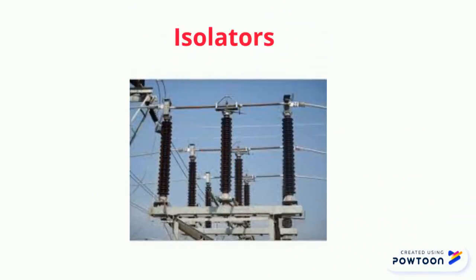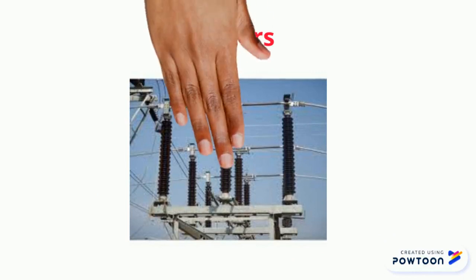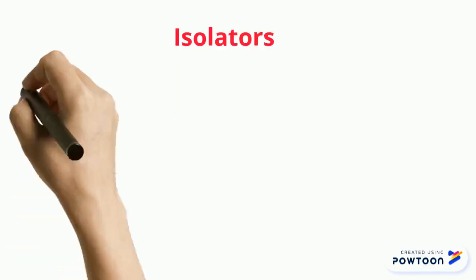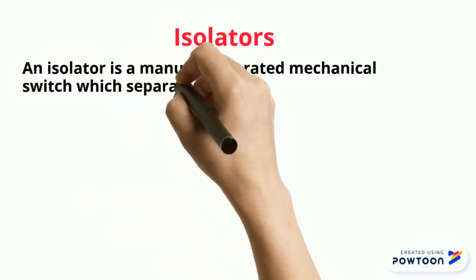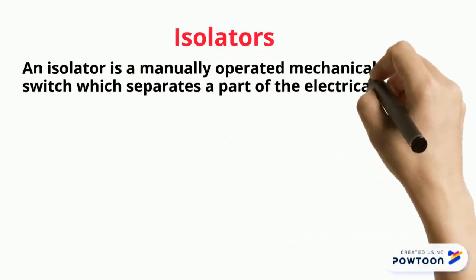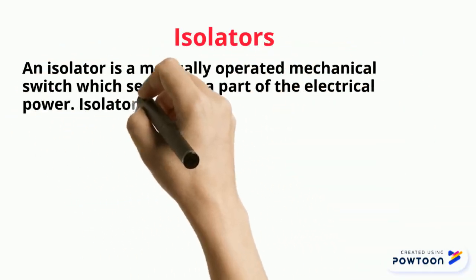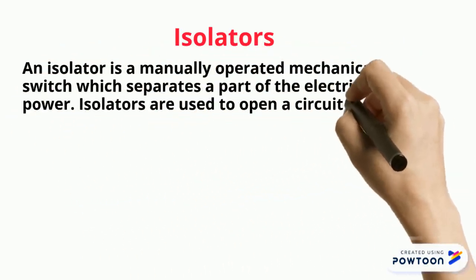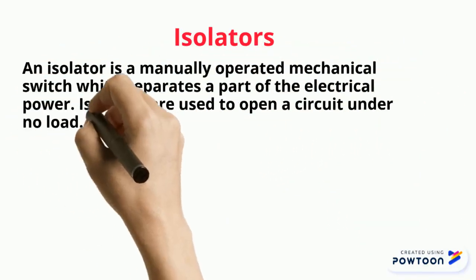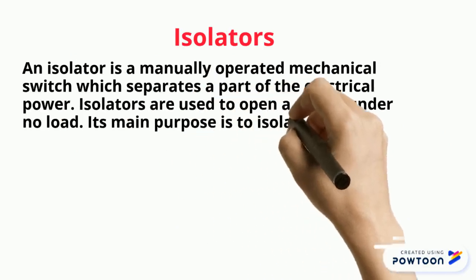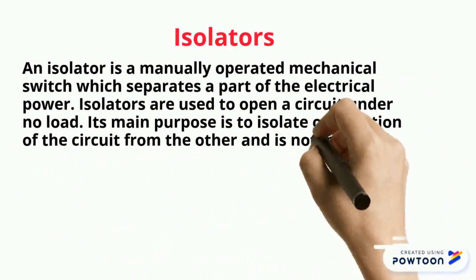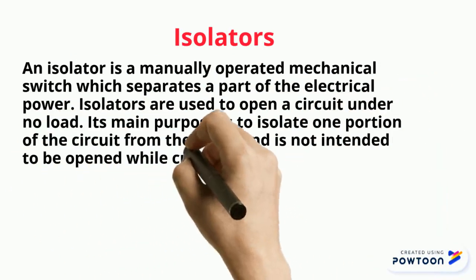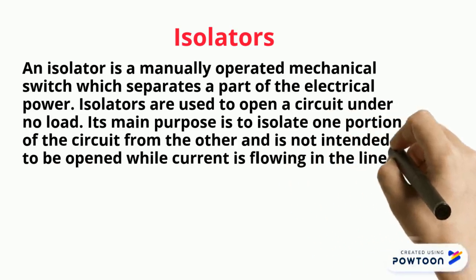Isolators. An isolator is a manually operated mechanical switch which separates a part of the electrical power. Isolators are used to open a circuit under no load. Its main purpose is to isolate one portion of the circuit from the other and is not intended to be opened while current is flowing in the line.